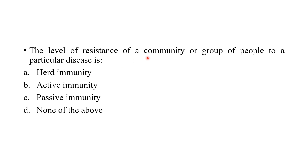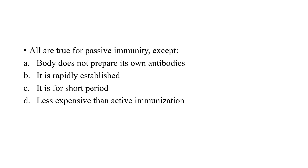The level of resistance of a community or group of people to a particular disease — when a community group has sufficient immunity to a particular disease so that it cannot spread easily — this is called herd immunity. Examples include polio and smallpox eradication through herd immunity.